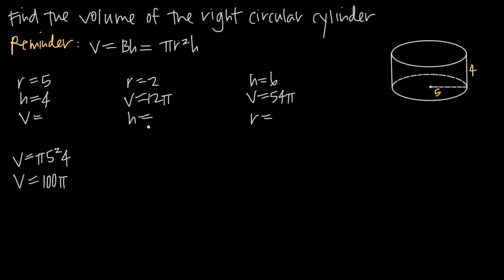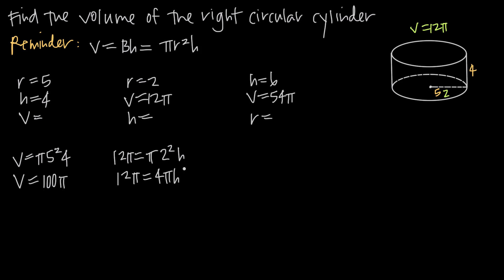In the second example, we've been given the radius and the volume, and we need to find the height. The radius is 2, and the volume is 12 pi. We'll use the formula V = pi r squared h. Plugging in: 12 pi equals pi times 2 squared times h. Simplifying: 2 squared is 4, so we get 12 pi equals 4 pi h.